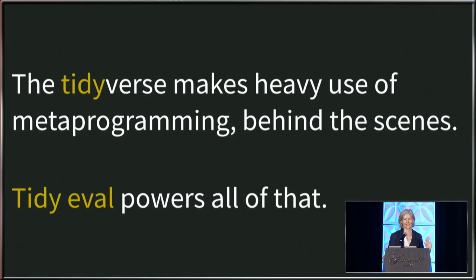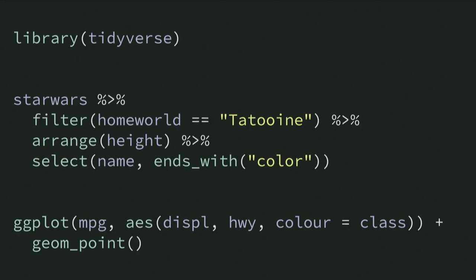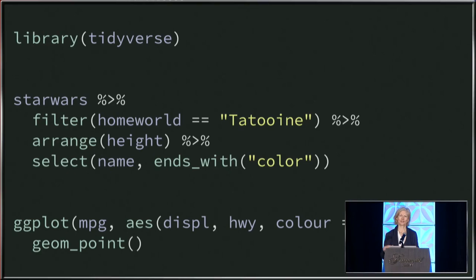If you don't know what I mean by the Tidyverse doing a lot of metaprogramming, let's look at some canonical Tidyverse code. Here I'm showing working with the Star Wars dataset that comes with dplyr, doing some data wrangling, then switching to a different dataset to show what ggplot2 does. One thing I've been talking about with Greg Wilson, who joined our studio from Python, is what's up with all these unquoted variable names — home world, height, highway, class. That is brought to you by metaprogramming under the hood.